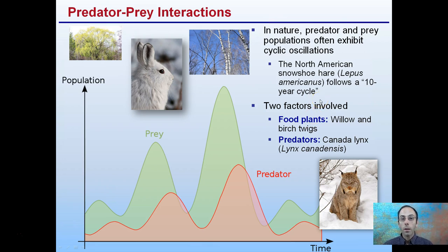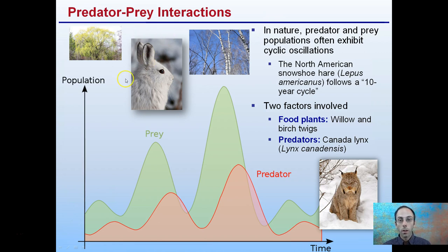What ends up happening is this interaction. In nature, predators and prey populations often exhibit cyclical oscillations. Here we have time on the x-axis and population on the y. Looking at our North American snowshoe hare and our Canadian lynx, which feeds on the snowshoe hare — so the snowshoe hare is the prey. Notice when the prey increases, soon after that there's a delay, the predators will also increase. When the prey decreases, so will the predators.